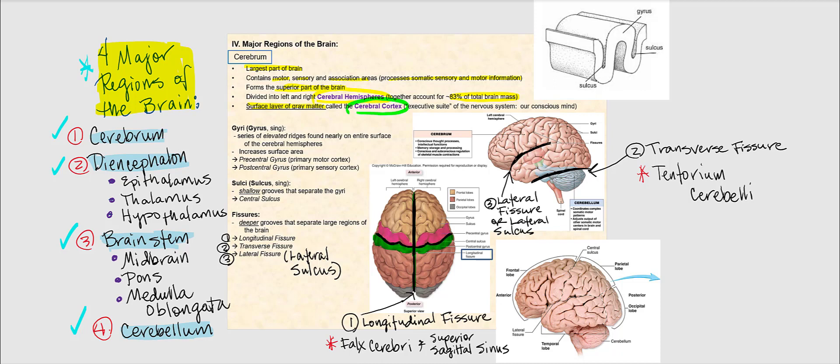Before we get into the details of the cerebrum, let's look at some of these structures, beginning with the gyri. A gyrus is a series of elevated ridges found nearly on the entire surface of our cerebral hemisphere. If we're talking about one elevated ridge, that's referred to as a gyrus. If we're looking at two or more, then we refer to them as gyri. These gyri increase the surface area of our cerebrum.